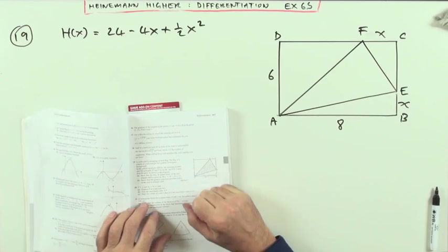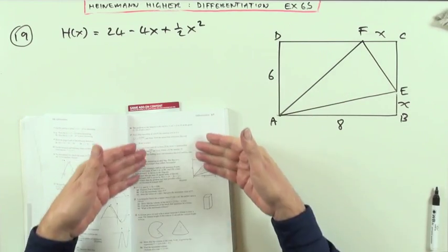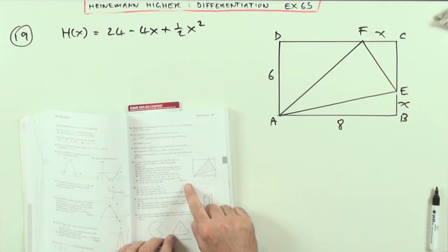Hi Norman, hi. Chapter 6 on differentiation at the mixed exercise, 6s at the end, in the optimisation section, number 19, a form of higher question.